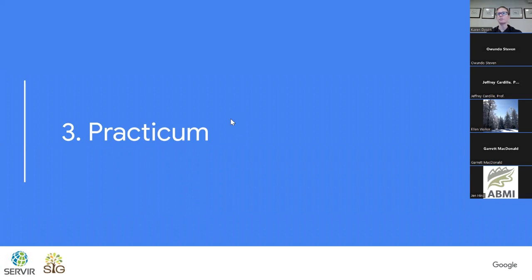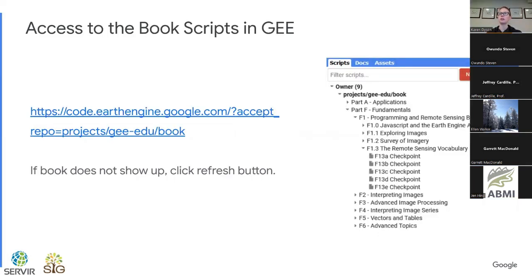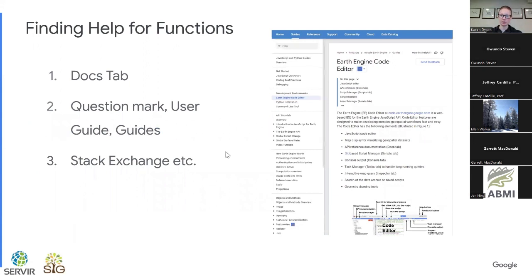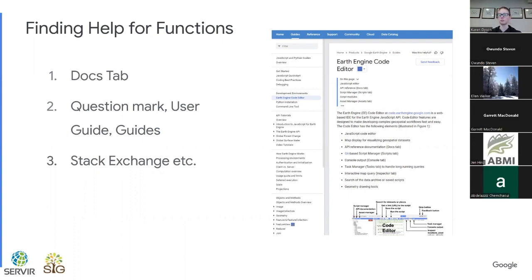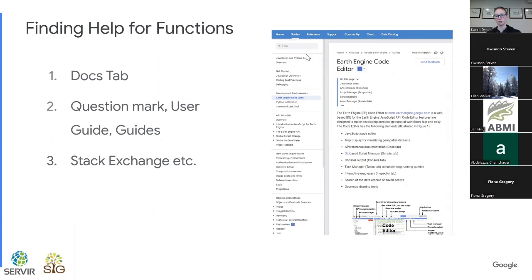So let's go ahead and dive into the practicum. To access the book scripts in Google Earth Engine, if you haven't done this previously, there is a link repeated multiple places in the book. If you click on this link and don't immediately see the repository pop up in your scripts, you can click on the refresh button and it will pop up. Also, we're going to be talking about a lot of functions today. There are a couple of different ways of finding more help: your docs tab, a question mark in the upper right corner of the code screen where you can go to user guides and use the filter function, and tools like Stack Exchange.